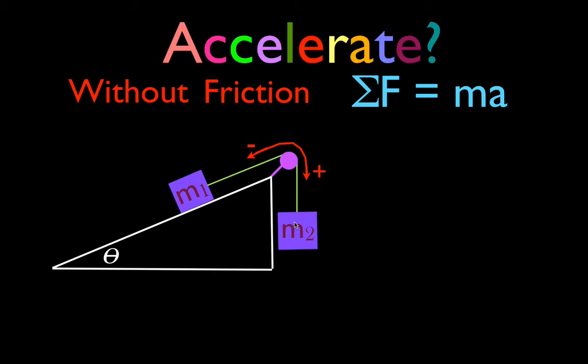Now if they're going to accelerate, there's really two possibilities. There is acceleration in the positive direction. The positive direction means that M1 would move up the incline plane and M2 would move down.